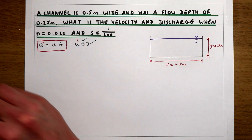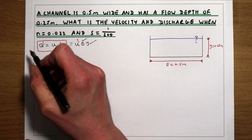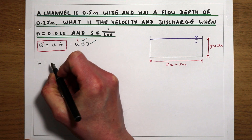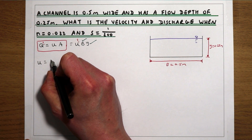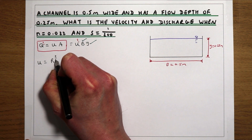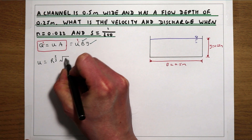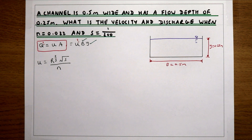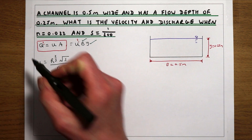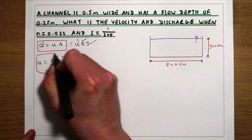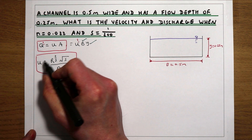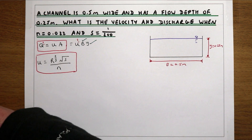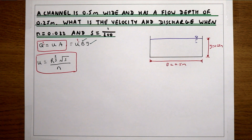We're going to need an equation that relates velocity to the parameters we've been given, and that equation is Manning's equation. Manning's equation tells us the velocity in our channel is equal to the hydraulic radius to the power of two-thirds, times the square root of the slope of the channel, divided by Manning's n. We're given the slope and Manning's n in the question, so the only thing we need to calculate is the hydraulic radius.